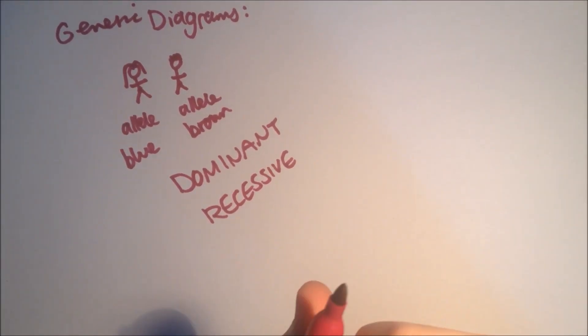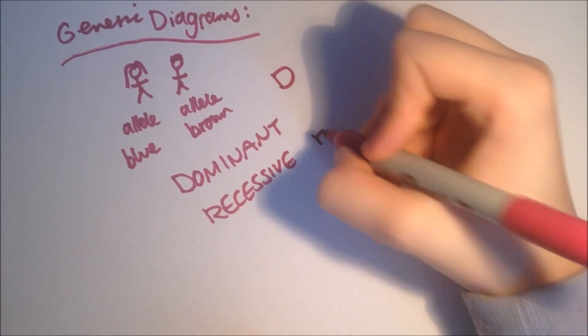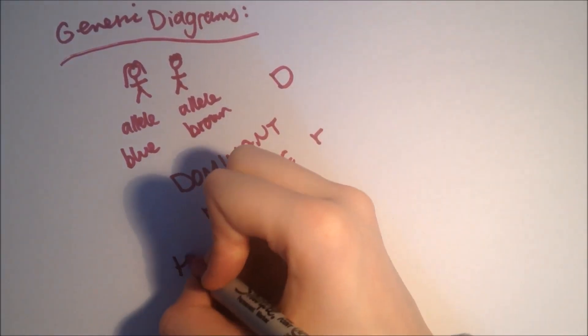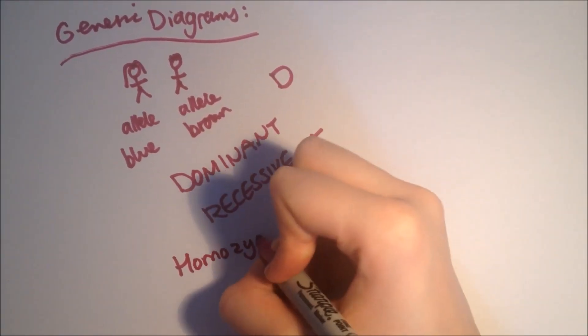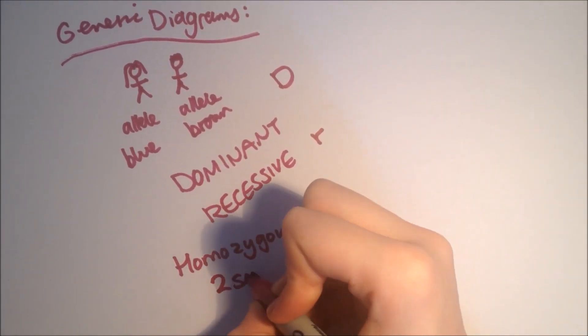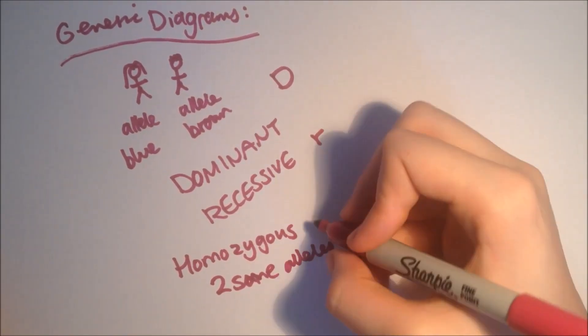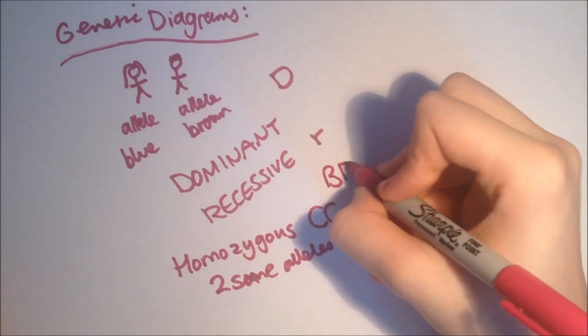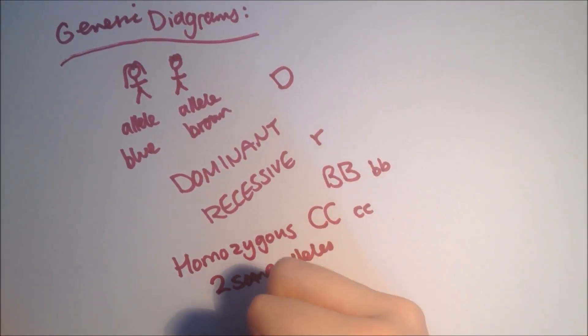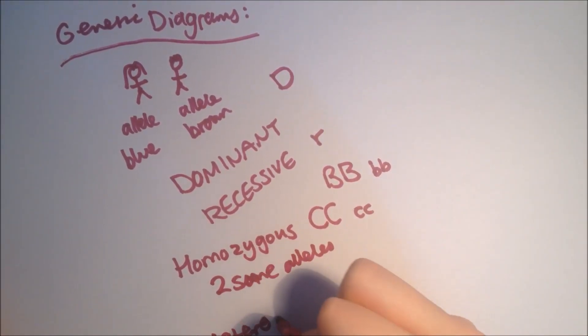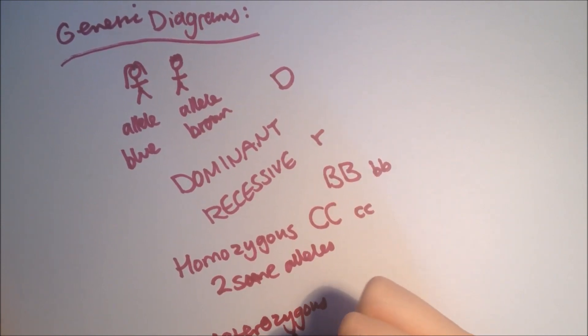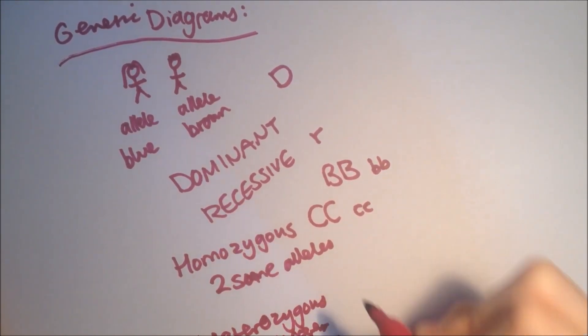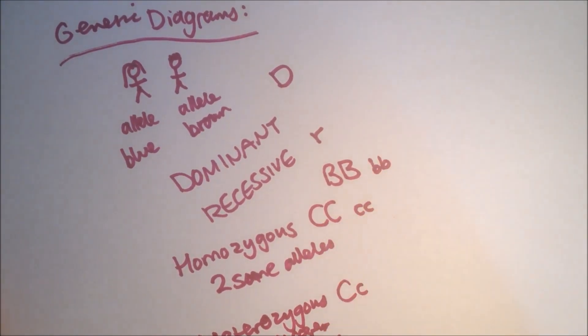In genetic diagrams, letters are used to represent genes. Dominant ones are shown with a capital letter and recessive with a little letter. If you're homozygous, which means you have two alleles the same, you have the same alleles. That means you have CC or BB, etc. But if it's heterozygous, that means you have two different alleles for a particular gene.